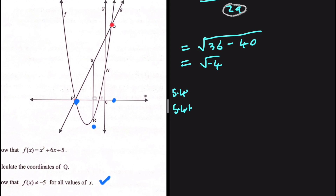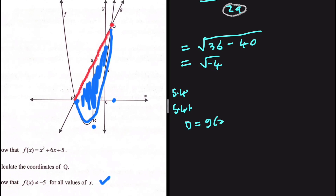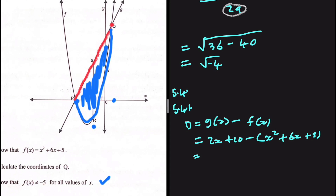The graph above is g of x and below is f of x, so we write the distance as g of x minus f of x. That gives: 2x plus 10 minus x squared plus 6x plus 5, which simplifies to minus x squared minus 4x plus 5. This is our distance equation.